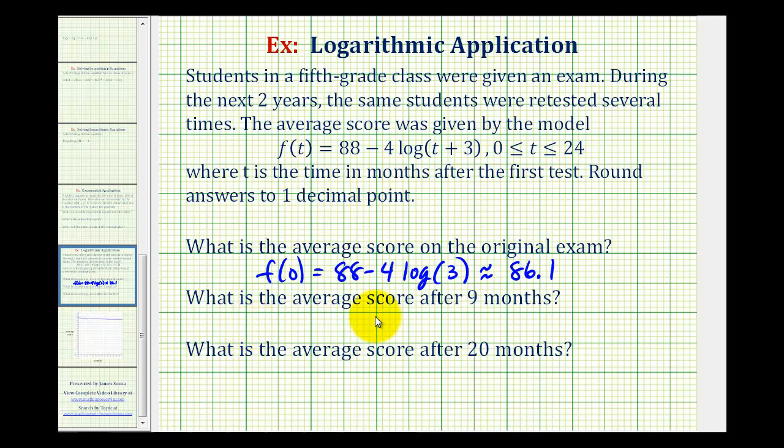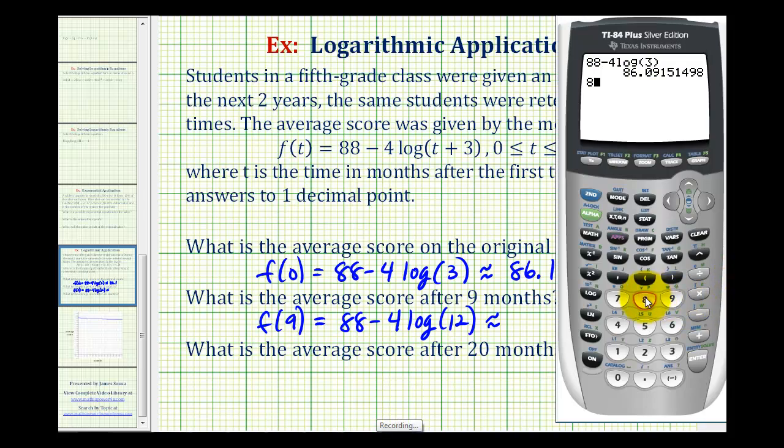The next question is what is the average score after 9 months? Which means what's the function value when t is equal to 9? So f(9) would be equal to 88 minus 4 times the common log of 9 plus 3, so we have the log of 12. Going back to the calculator to determine this function value, notice how the average score has dropped. It's now approximately 83.7.